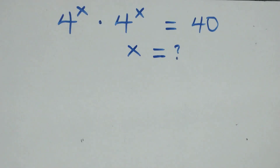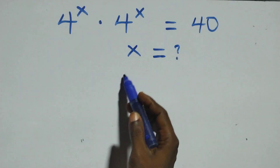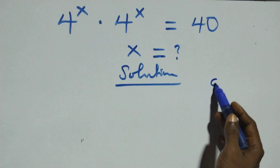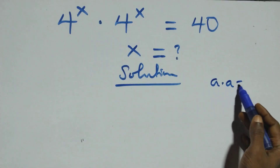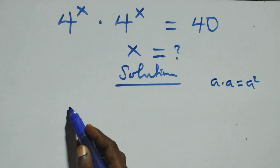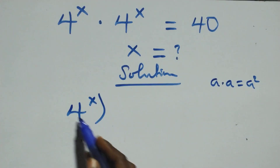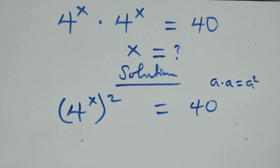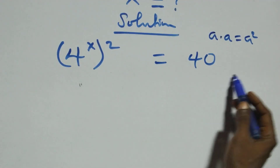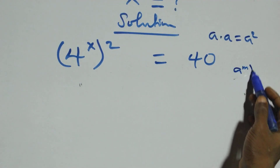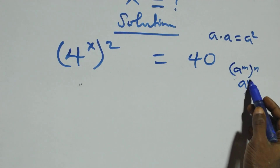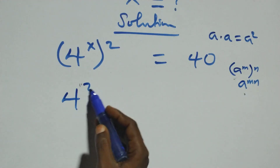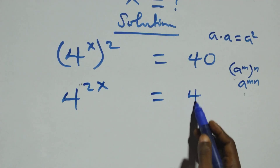Hello, you're welcome. We're going to solve this exponential equation. What we have here: when we have a times a, we write this as a squared. So multiplying, we have 4 raised to power x times 4 squared equals 40. This follows because a raised to power n, raised to power m, gives a raised to power mn, so the powers multiply, giving us 4 raised to power 2x equals 40.